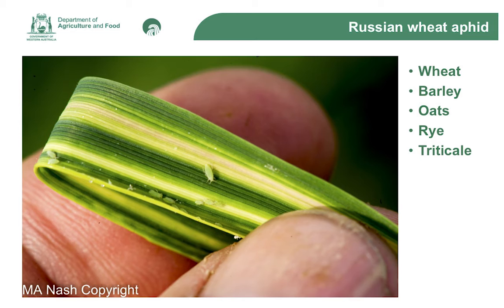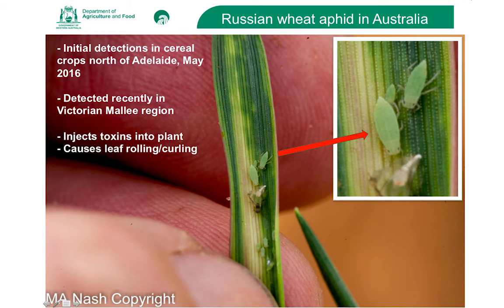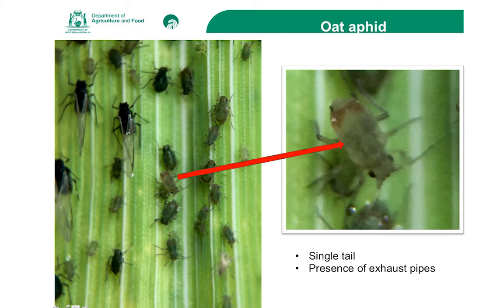Here's a closer look at the aphid. Those of you that know what the oat and corn aphids look like will see how quite different it is. Firstly, you'll notice the lack of exhaust pipes or cornicles at the top of the backside, and it's quite pointy at the end of the back. This is the oat aphid — you can see some winged aphids in there, which are much harder to identify, so generally we just go straight for the wingless version. The oat aphid has a very distinctive rusty patch at the top of the backside, and those cornicles are a good giveaway.